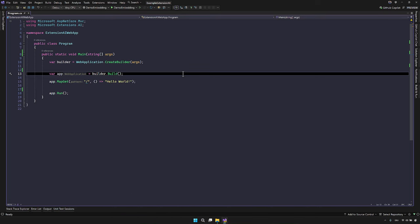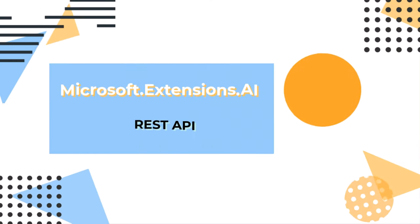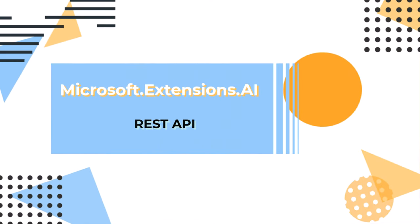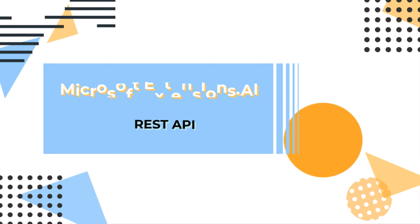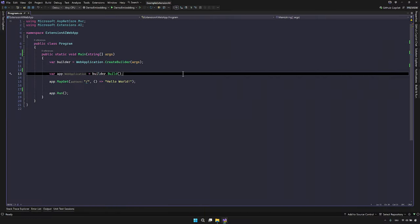For this demo, we will look at two examples. First, we will use the Ollama model with a REST API. Then, in the second part, we will use Azure AI inference with a GitHub-hosted model. Let's get started.